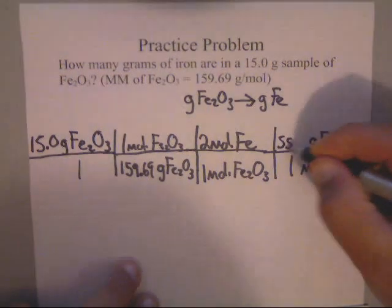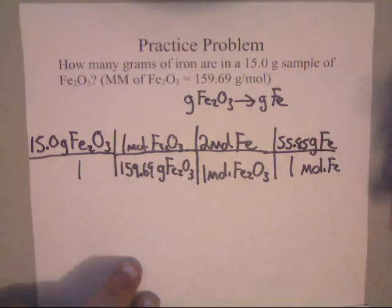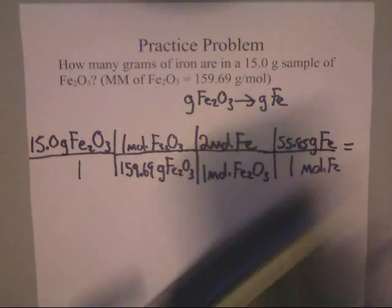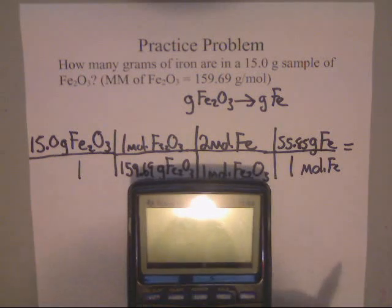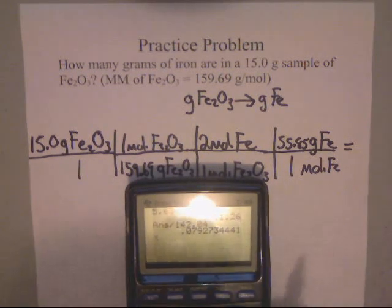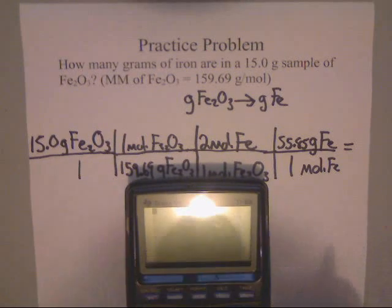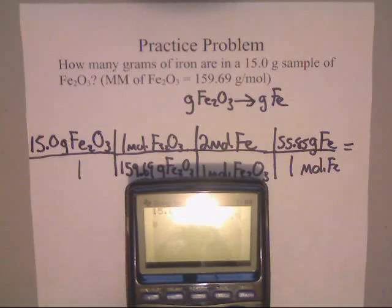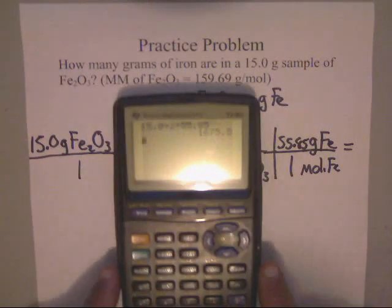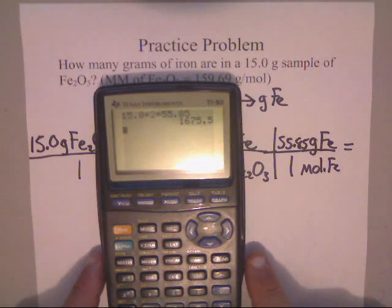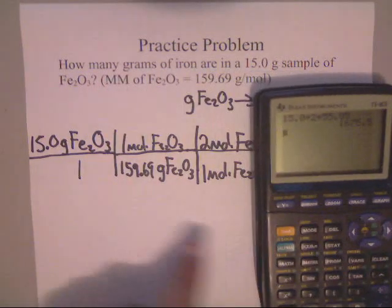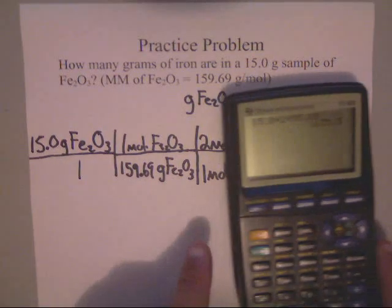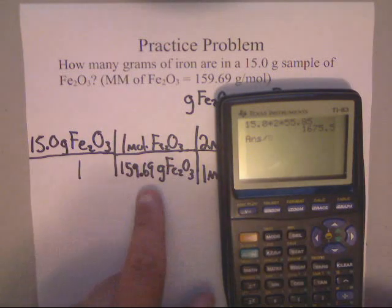We're pretty much done. All we need to do is put this into a calculator. We've got 15.0 times 2 times 55.85 - that's 1675.5 in the numerator. Everything else is 1s except the bottom, so we divide by 159.69.